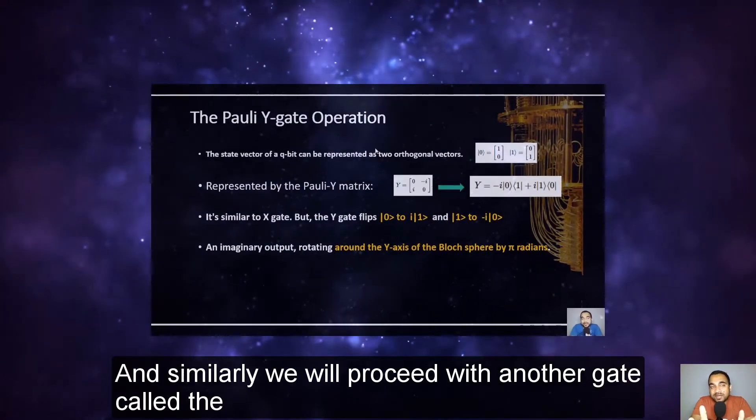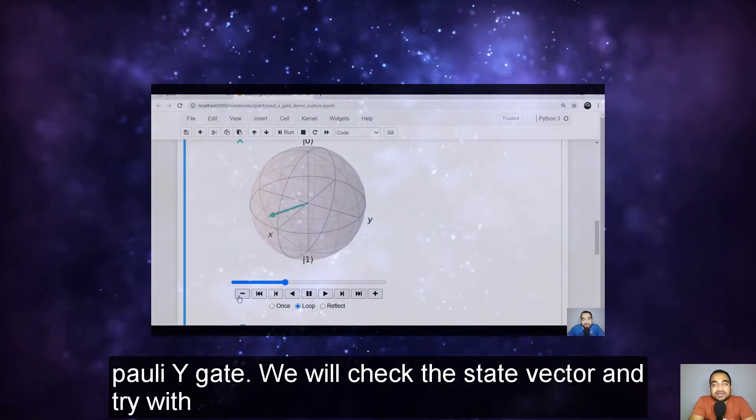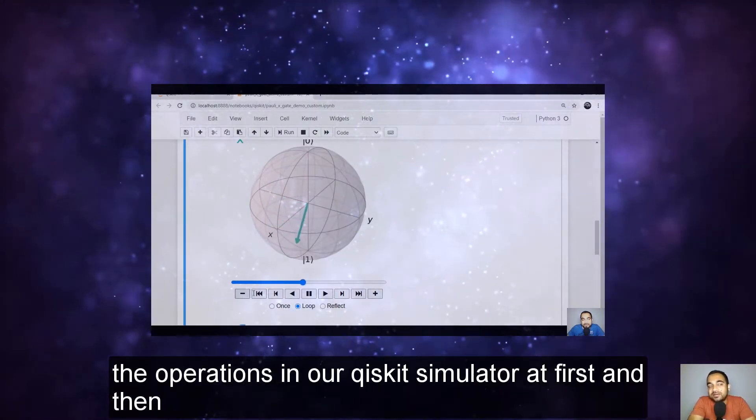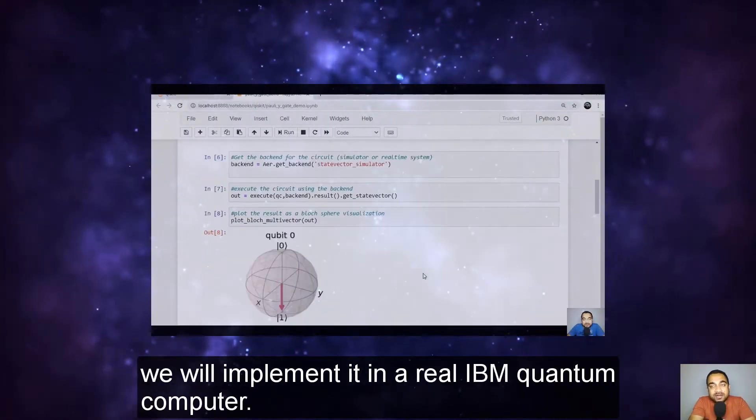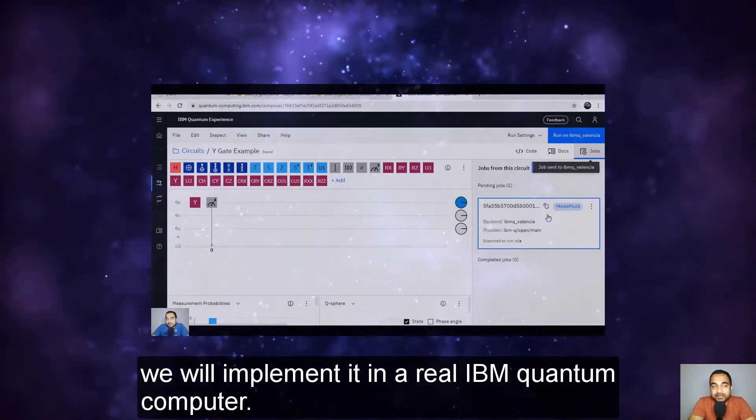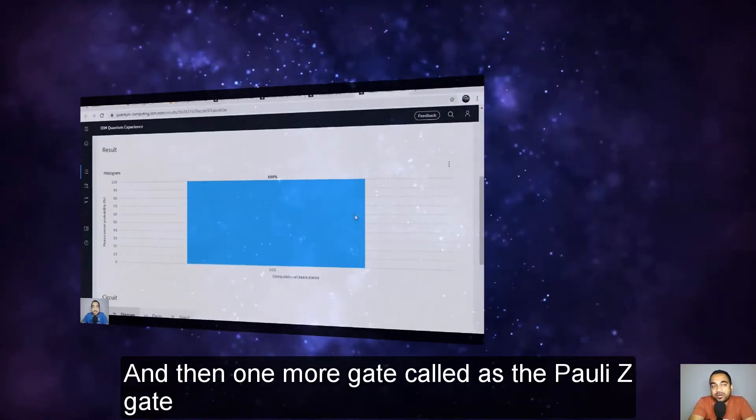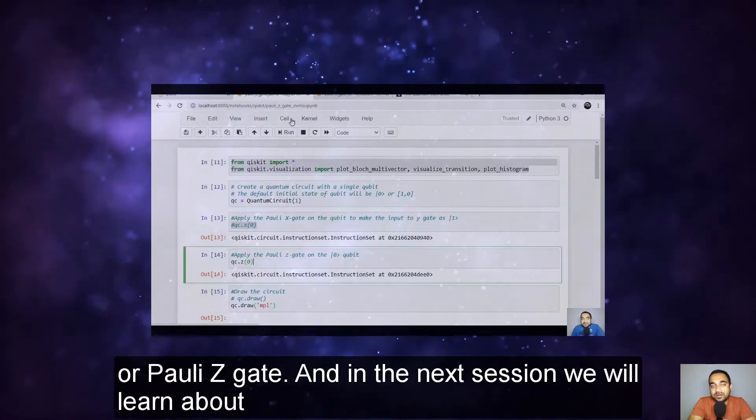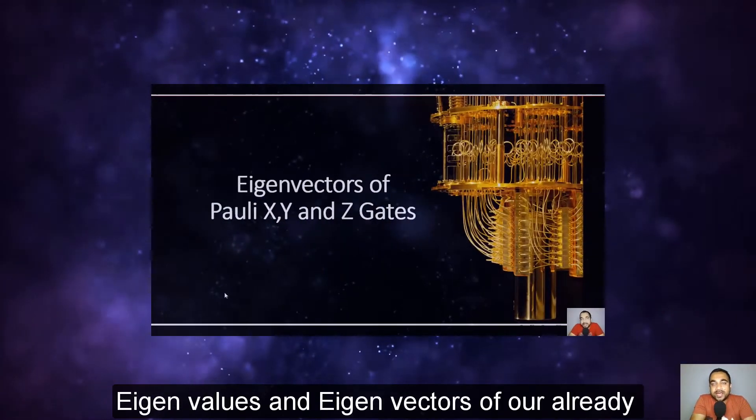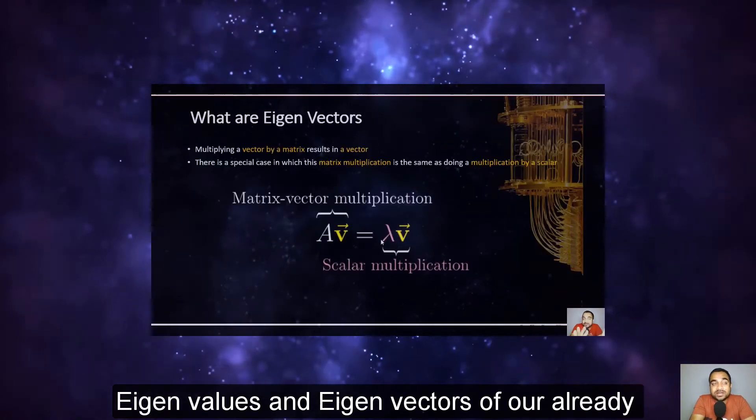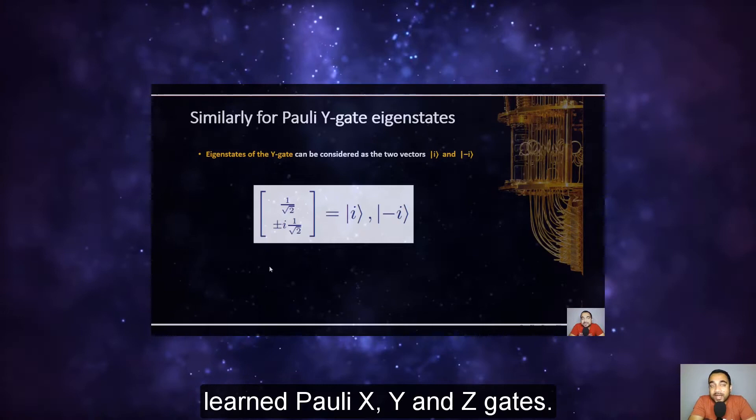And similarly, we will proceed with another gate called the Pauli Y gate. We will check the state vector and try with the operations in our Qiskit simulator at first, and then we will implement it in a real IBM quantum computer. And then one more gate called as the Pauli Z gate or Pauli C gate. And in the next session we will learn about eigenvalues and eigenvectors of our already learned Pauli X, Y, and Z gates.